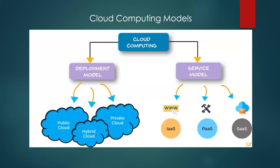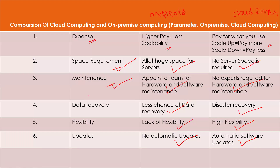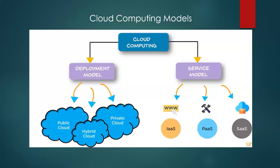The server is maintained by the cloud owners. They have real physical servers, and on top of that they install virtualization software — that will be covered later. Cloud vendors offer two types of models: a deployment model and a service model. The deployment model talks about who can access the cloud.